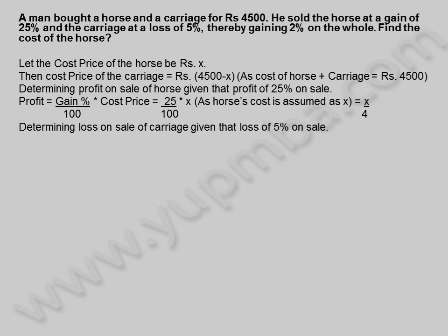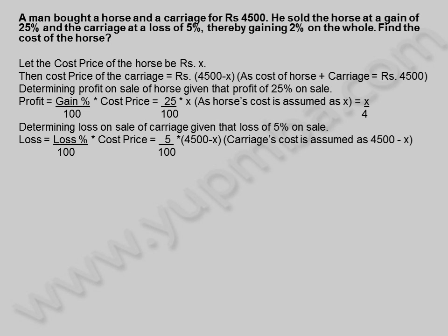Determining loss on sale of carriage given that loss of 5% on sale. Loss is equal to loss percentage by 100 into cost price, which is equal to 5 by 100 into (4,500 minus X), as carriage's cost is assumed as 4,500 minus X.